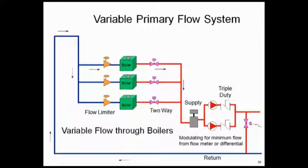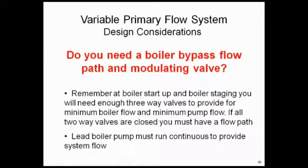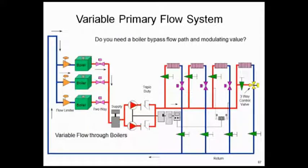The answer is absolutely yes — you have to have a boiler bypass flow path and modulating valve. We recommend putting a three-way valve in the system sized for the minimum flow rate for the boiler or the minimum flow rate for the pumps, whichever is highest, to make sure that flow path is established. If you don't do that, you will have issues. Also remember, when you turn the pump on, the lead pump must run continuously to provide system flow. We need a flow path even if all the two-way valves at the heating systems are closed. That's why this slide shows three-way valves at the very end of the system — sized for the minimum flow rate of one boiler and the minimum flow rate of the pump, whichever is greater. Alternatively, you can use the two-way bypass valve in the equipment room.